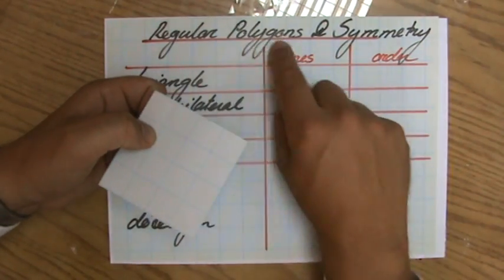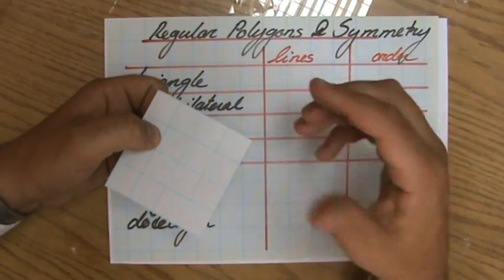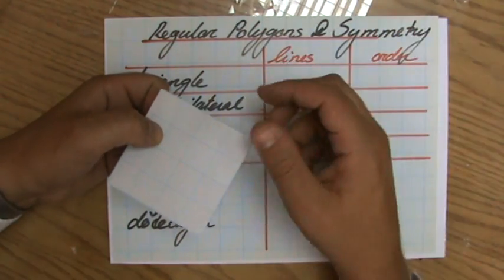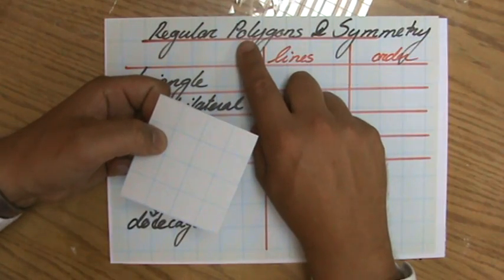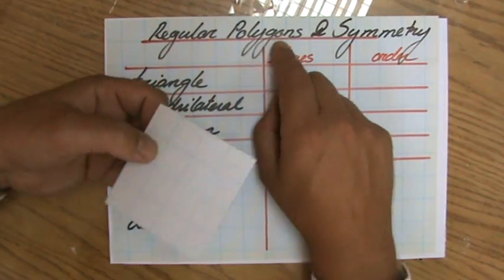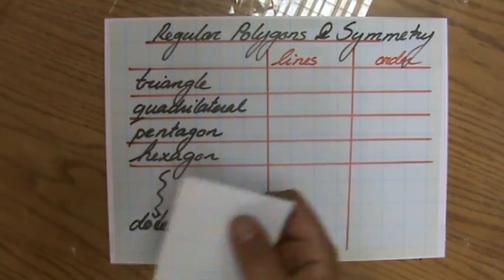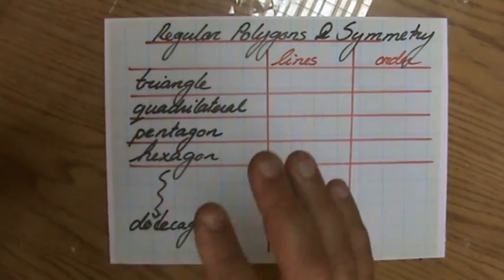Where a polygon, I've explained before by the way, is a two-dimensional figure consisting only out of straight lines, so no curves, with at least three angles. So polus, many, gones, angles, many angles or many sides. Okay, we're going to have a look now at regular polygons.